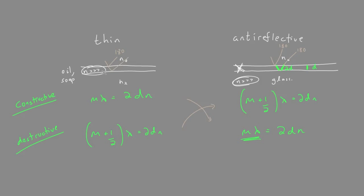We're used to having the index of refraction of the thin film itself as the highest. So now in anti-reflective coatings, both waves, when they are reflected, are undergoing a phase shift of 180 degrees.